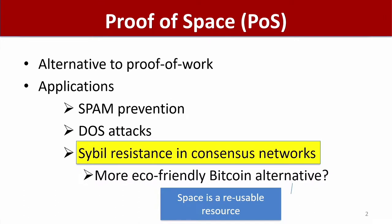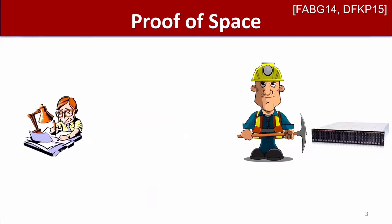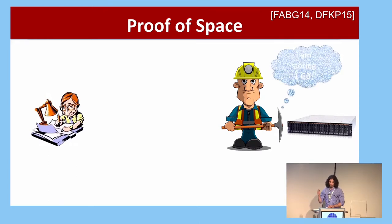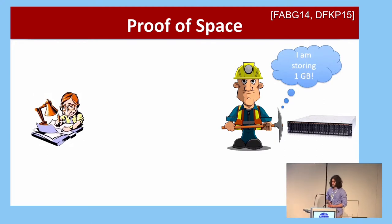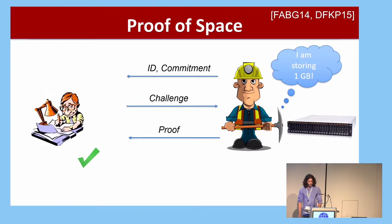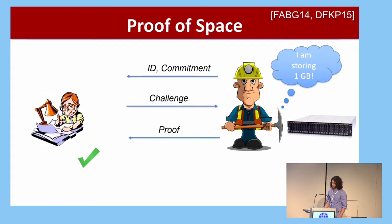It's proposed as a more eco-friendly way of getting a system like Bitcoin. A proof of space is an interactive protocol between a prover and a verifier, where the prover is allowed to choose the amount of space it commits to store. It sends a commitment to the verifier, the verifier sends a challenge, and the prover produces a proof that should convince the verifier that it is using almost all of the storage it claims to be using.